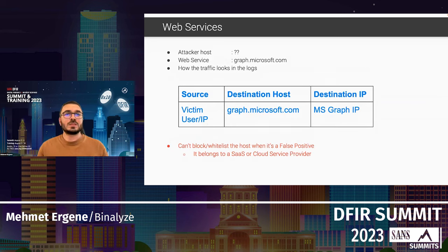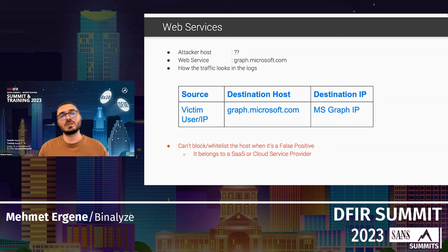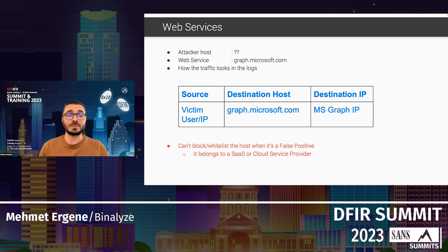The second modern C2 technique uses legitimate web services such as Microsoft Graph, Slack, Discord, or Microsoft Teams. The attacker's infrastructure is hidden entirely. In logs, you only see the victim's IP and the legitimate destination host and IP — for example, Microsoft Graph — so you cannot block or whitelist it without disrupting legitimate services.